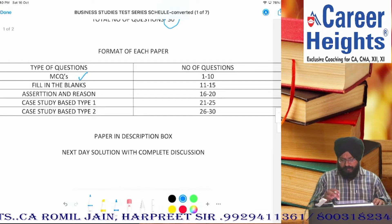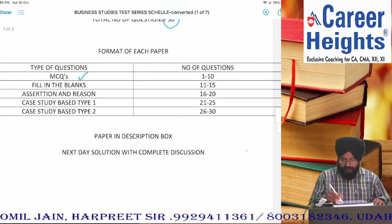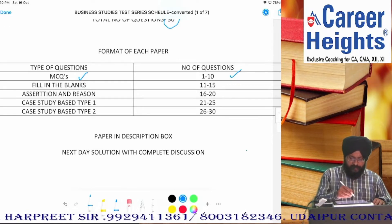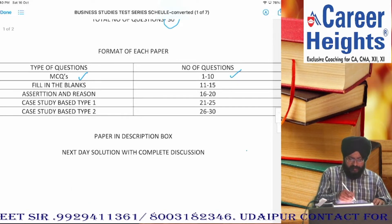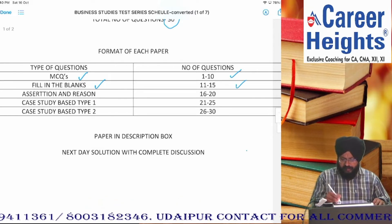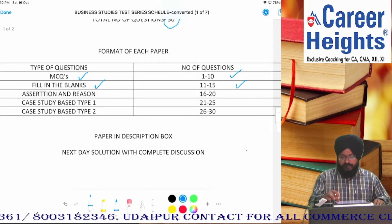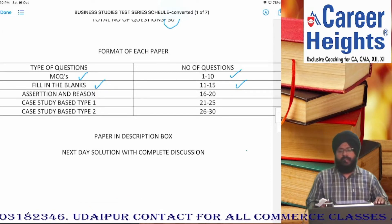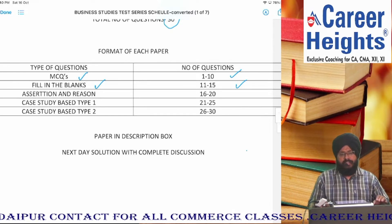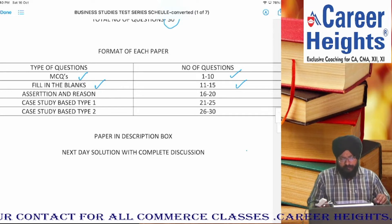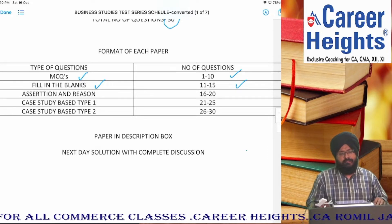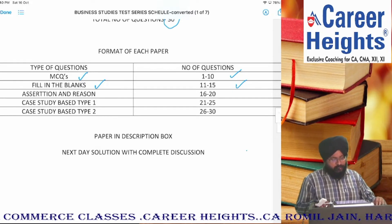There will be MCQ based questions, jo ki honge question number 1 to 10. Then there will be fill in the blanks type questions — jo fill in the blanks questions hain, woh honge 5. Students, as per the sample paper, humne various types ke questions dekhe hain. Is baar CBSE ke sample paper mein alag-alag tariqe ke questions hain. Uske saath ye blueprint hai, aur har test ke andar chapter wise test ka format hai students. So chapter wise test mein aapko yeh 5 types ke questions dekhne ko milenge.